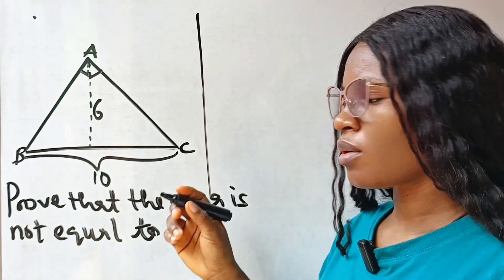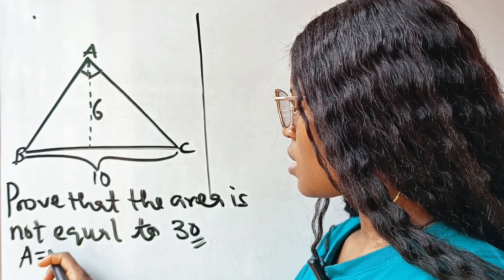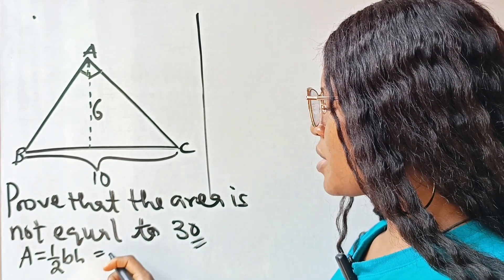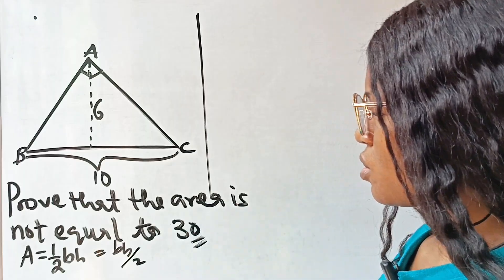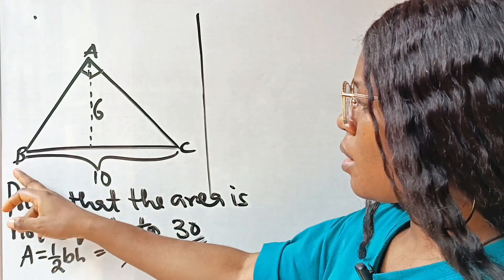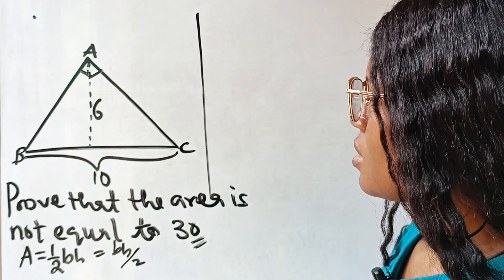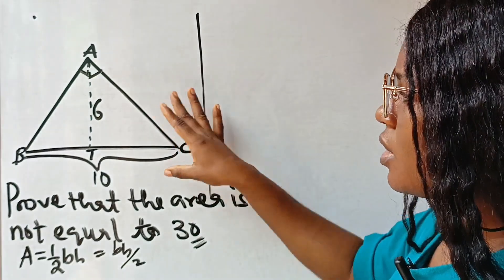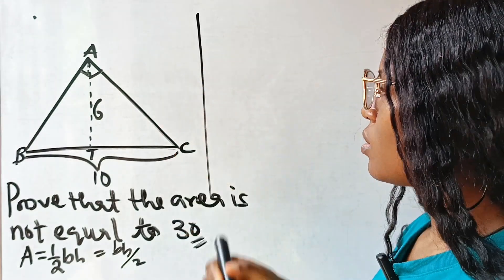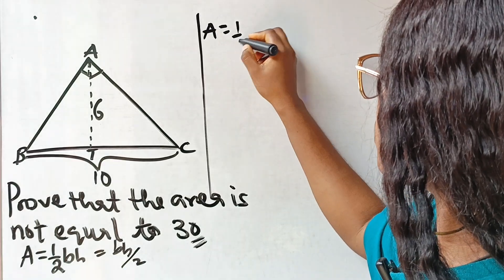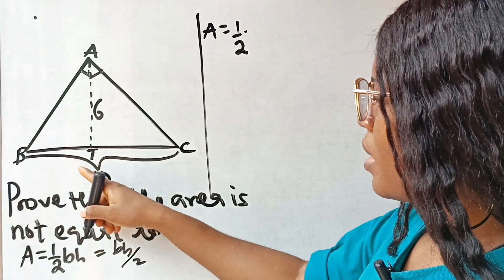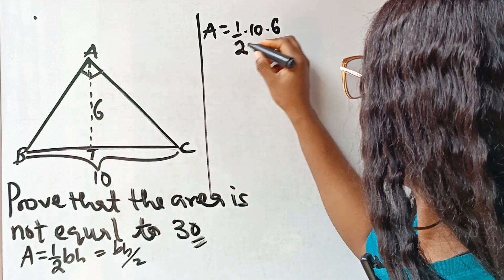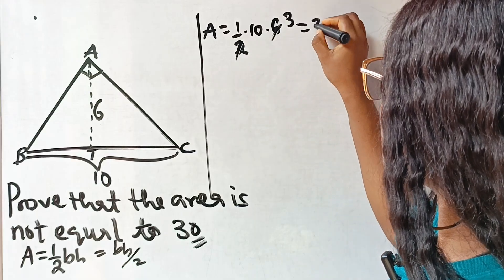The area of a triangle is equal to half multiplied by the base and the height, which can be written as base times height divided by two. If we take BC as our base and AO — let's call this point T — and AT as our height, the area will be equal to half multiplied by the base, which is 10, multiplied by the height, which is 6.